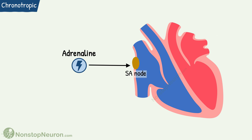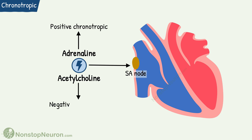For example, adrenaline speeds up the SA node and thereby increases the heart rate, so it is called a positive chronotropic agent. On the other hand, acetylcholine slows down the SA node, so it decreases heart rate — in other words, it produces negative chronotropic action. So these were chronotropic actions.